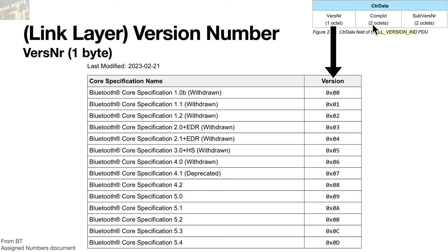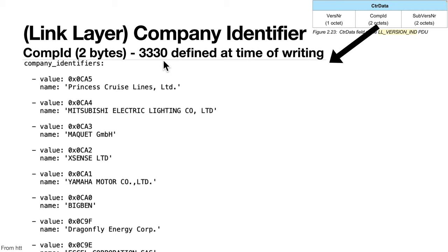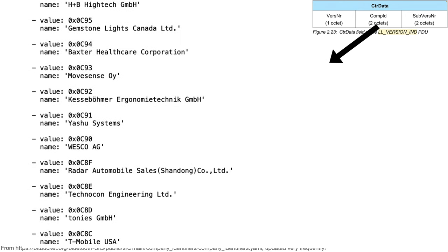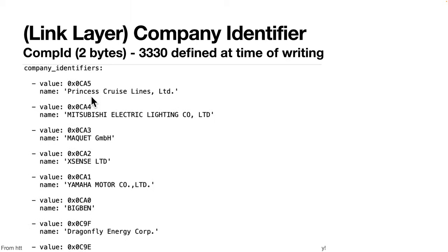The version number tells you what version of the Bluetooth specification the device conforms to. This can be interesting from a vulnerability assessment perspective because there can be protocol-level bugs in earlier spec versions that were fixed in future versions — everything running an older version will be vulnerable forever unless the particular vendor made an individualized change. Looking at the company ID, there are 3,330 defined at the time of original writing — a big list of companies that have signed up with the Bluetooth SIG. At the time I made this slide, the top entry was Princess Cruise Lines, which I found weird — why does Princess Cruise Lines need a Bluetooth ID?